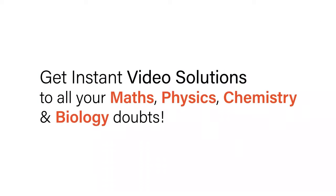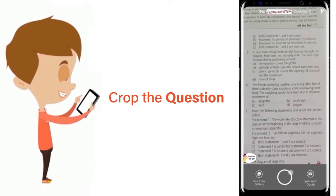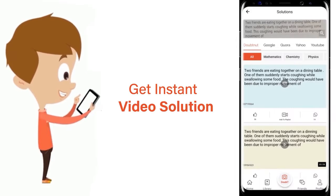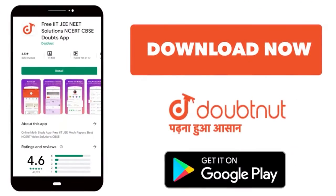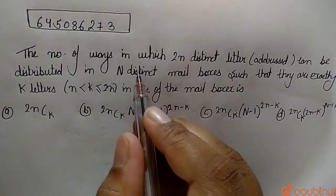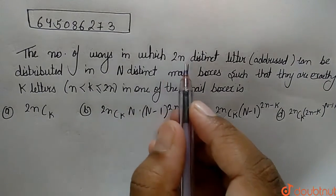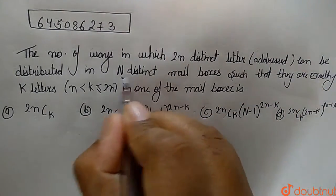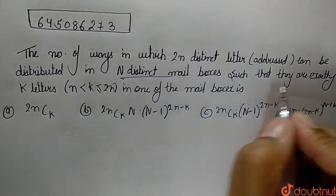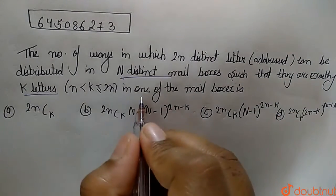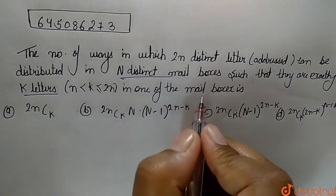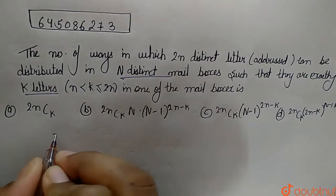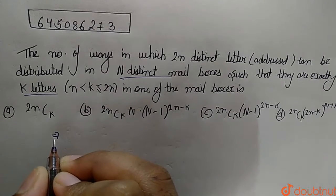With DoubtNet, get instant video solutions to all your maths, physics, chemistry, and biology doubts — just click the image of the question, crop it, and get an instant video solution. Download the DoubtNet app today. The question here is: find the number of ways in which 2n distinct letters can be distributed in n distinct mailboxes such that there are exactly k letters in one of the mailboxes.